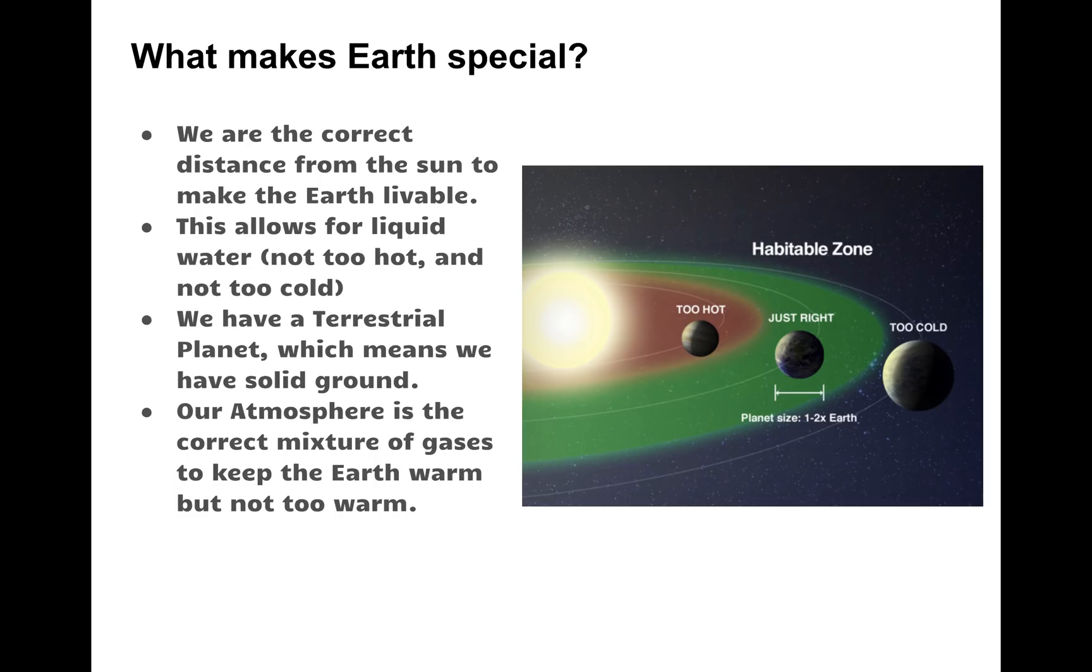So we are in what we call the habitable zone. That means that we are the correct distance from the sun to allow for liquid water. If we were too close to the sun, we would have all of our water be in water vapor form and gas form because it's very hot closer to the sun. If we were too far from the sun, we would have all of our water be in solid form as ice.